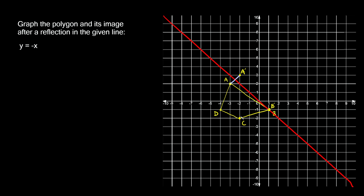Point C is two spaces away from the line of reflection, so C prime is two spaces away on the other side. Point D is two and a half spaces away, so D prime is two and a half spaces away. Then connect the dots: A prime to B prime to C prime to D prime back to A prime. There's your reflected polygon across the line of reflection y equals negative x.